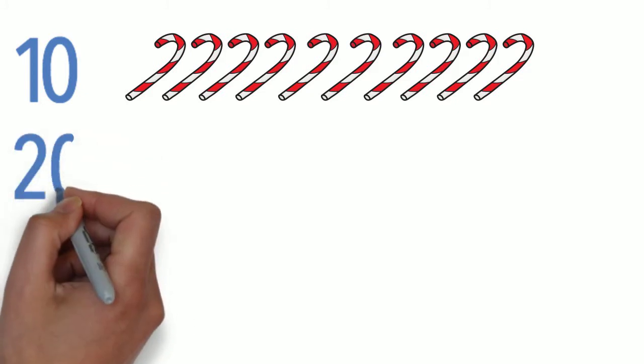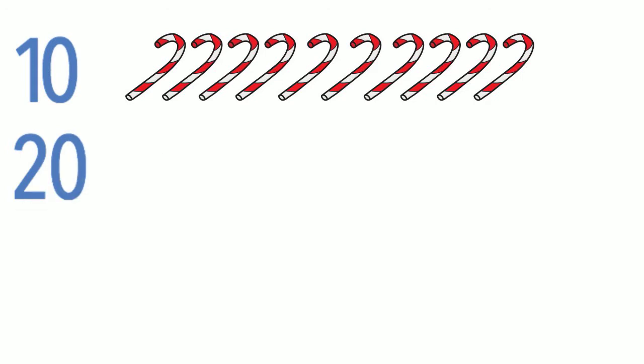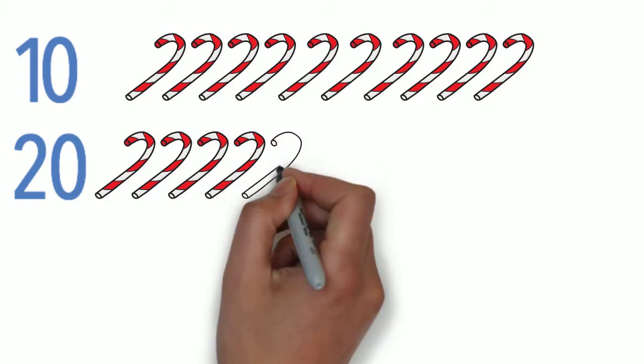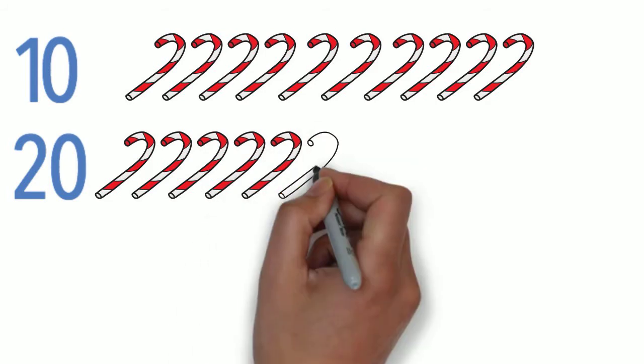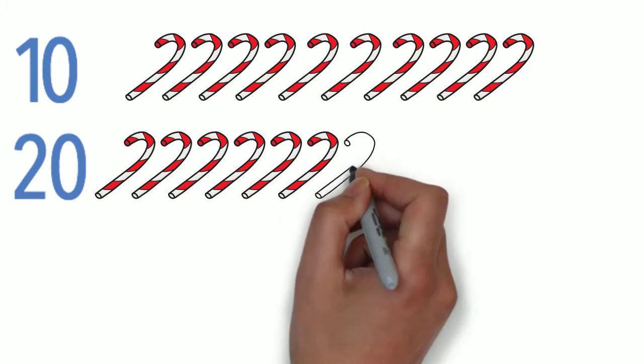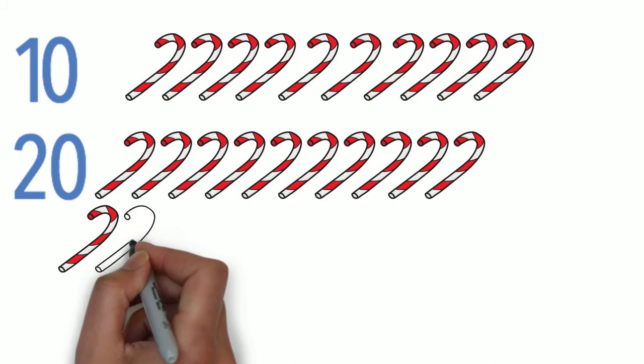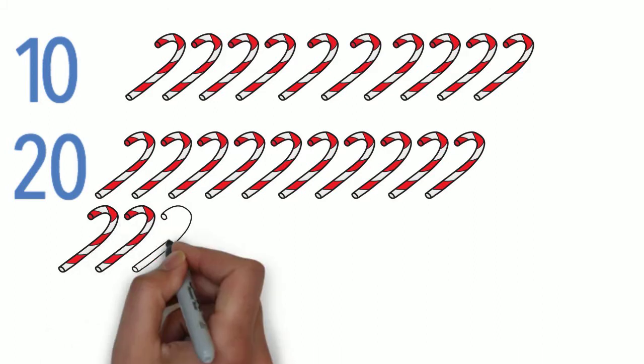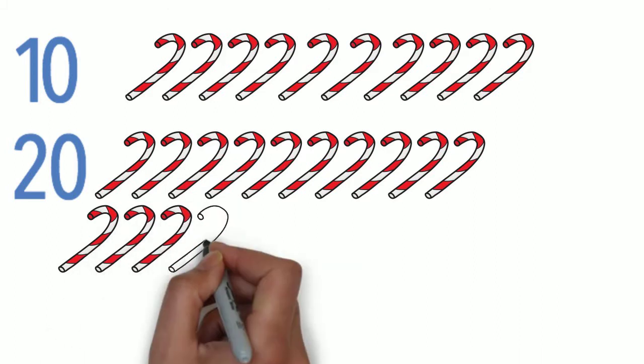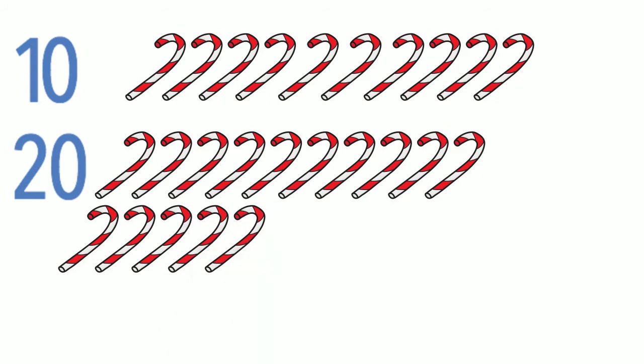The next ten is twenty, so you need twenty ones. So just count out twenty objects.